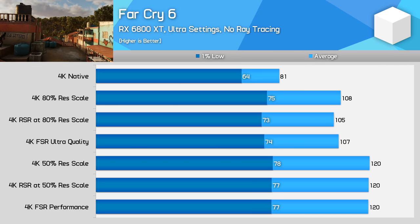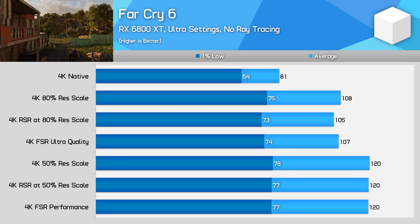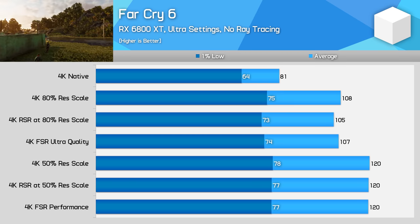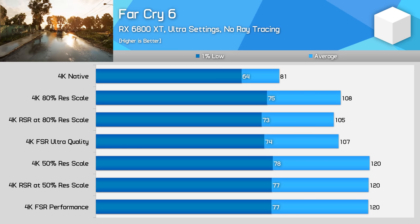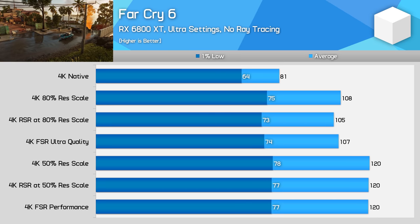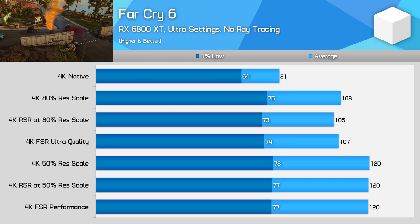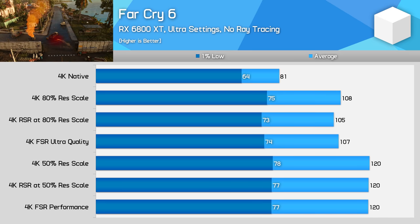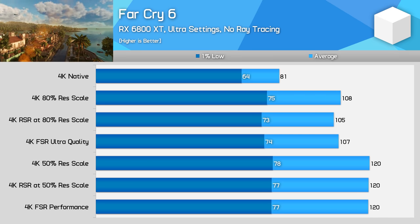In terms of how this stacks up against NVIDIA's NIS, we can't do a direct comparison on the same GPU since these are driver features exclusive to each vendor respectively. But the margins seen in our testing today are very similar to the results we saw when testing NIS last year on an RTX 3080 comparing NIS to native rendering and FSR performance. Both techniques are able to improve performance over native rendering and have minimal performance overhead.